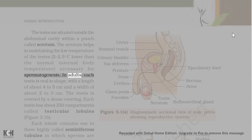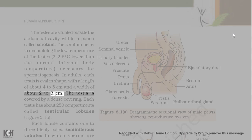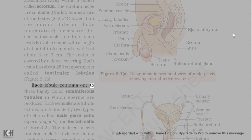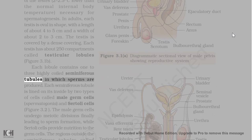In adults, each testis is oval in shape, with a length of about 4-5 cm and a width of about 2-3 cm. The testis is covered by a dense covering. Each testis has about 250 compartments called testicular lobules. Each lobule contains 1-3 highly coiled seminiferous tubules in which sperms are produced.